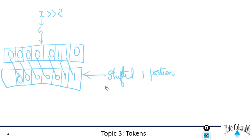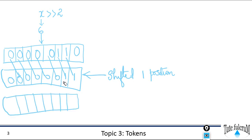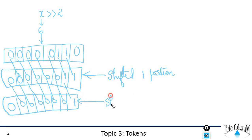After shifting one position, you can see a vacant bit position which will be padded with zero, and the least significant bit will be discarded. That is, when we shift any number to the right, the least significant bits are discarded while the most significant bits are replaced by zeros. We shift one more position to the right to meet our two-bit requirement, and this is our output.